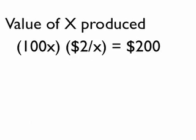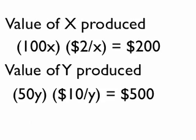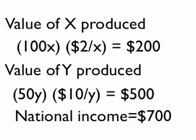Keeping this straight will help in later applications. I strongly recommend that you keep these units straight as you do these calculations. In a similar fashion, we can calculate the value of Y production as equal to $500 for this economy. The total value of national production then is $700, adding these two together.